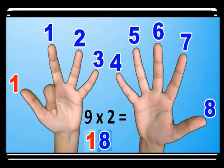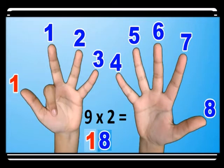For nine times two, you count from the left thumb: one, two — you bend the second finger. Before the bent finger you have one, and after the bent finger you have eight, so you get eighteen. Nine times two is eighteen — every child can do this very easily.